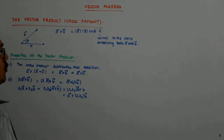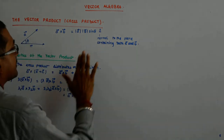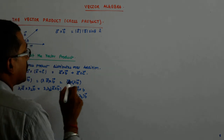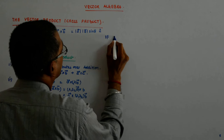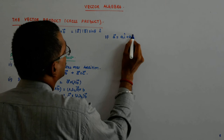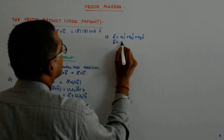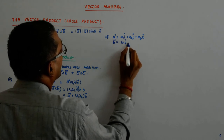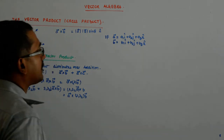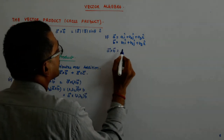Now we will use these properties to find out what the cross product actually is in component form. If a is given by a1 i-hat plus a2 j-hat plus a3 k-hat, and b is equal to b1 i-hat plus b2 j-hat plus b3 k-hat.